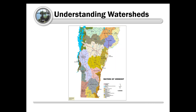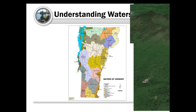In Vermont, the two largest watersheds we drain to are the Connecticut River and Lake Champlain. Both are linked, as Lake Champlain flows north into the Richelieu River and out into the St. Lawrence and eventually the Atlantic Ocean - the same is true for the Connecticut River. The Lake Champlain watershed is broken into sub-watersheds by our rivers; for instance, the Lamoille River watershed and the Winooski River both drain to Lake Champlain and are nested within it.